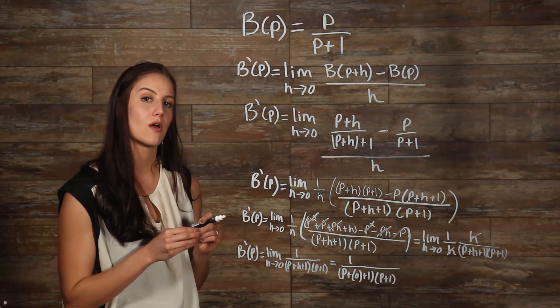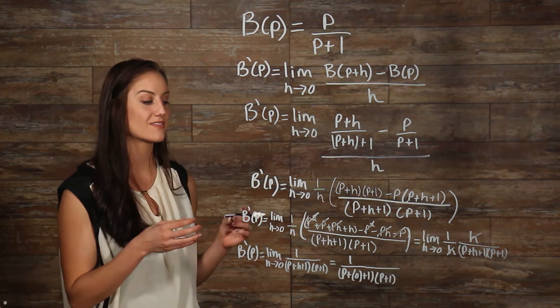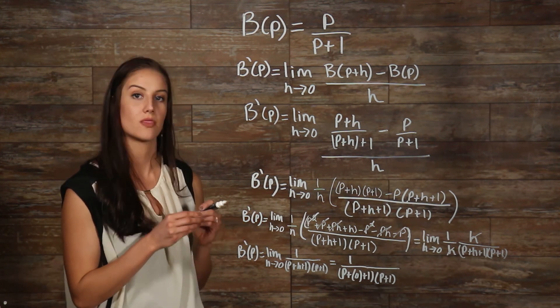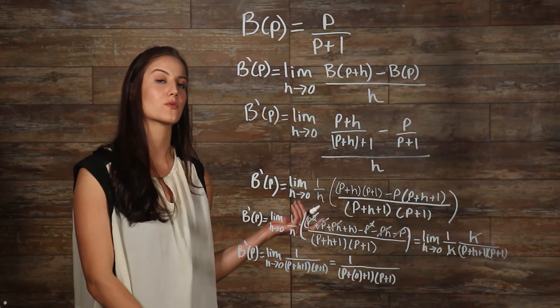Once we plug in our zero, our h is just going to drop out. That's going to leave us with two p plus ones on the bottom. Therefore, our derivative is B prime of p equals negative 1 over p plus 1 squared.